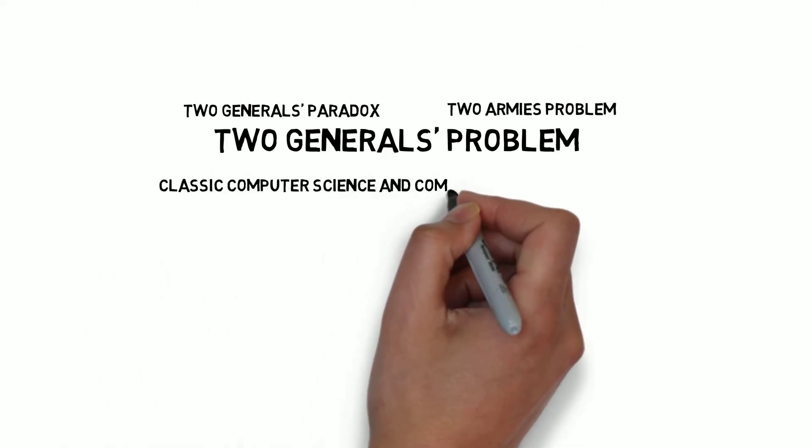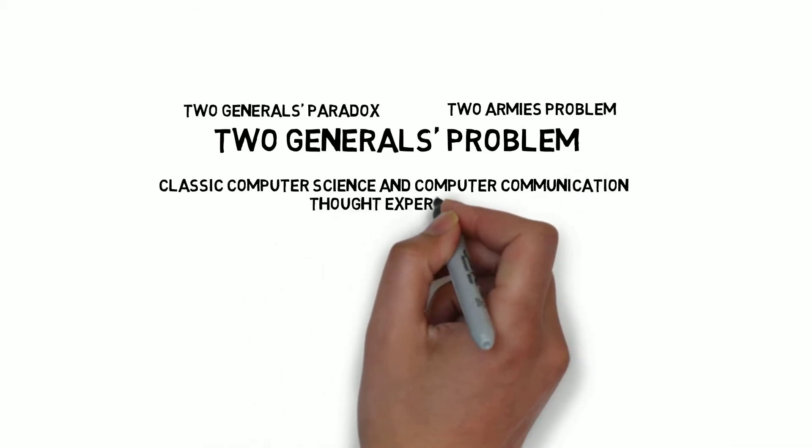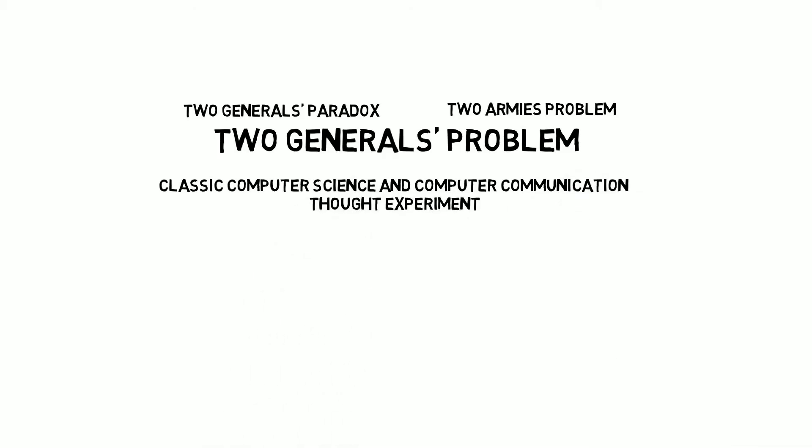The two generals problem, also known as the two generals paradox or the two armies problem, is a classic computer science and computer communication thought experiment that we are going to talk about in this video.